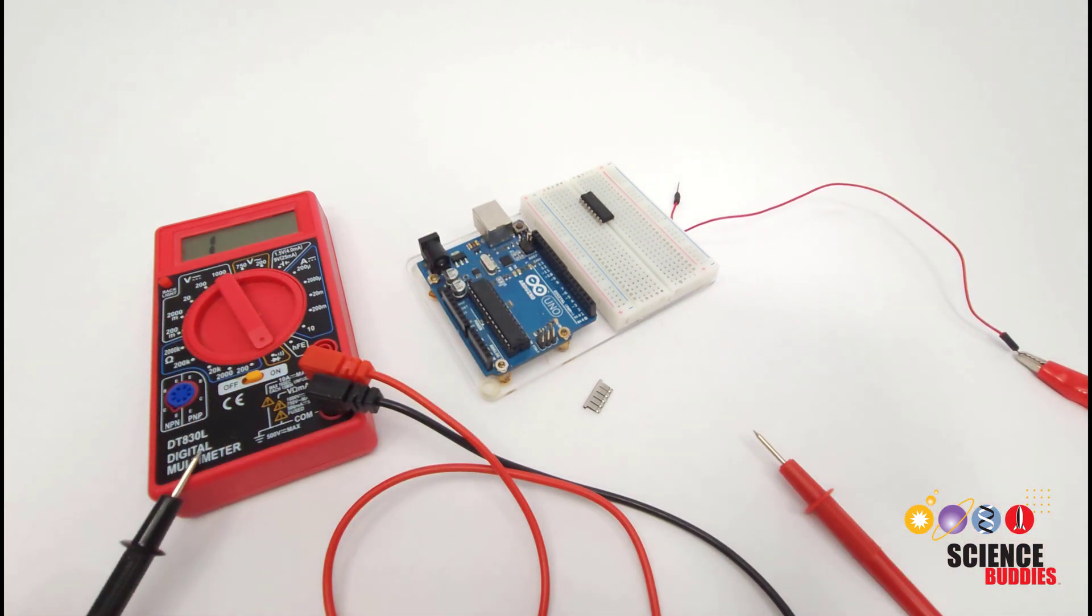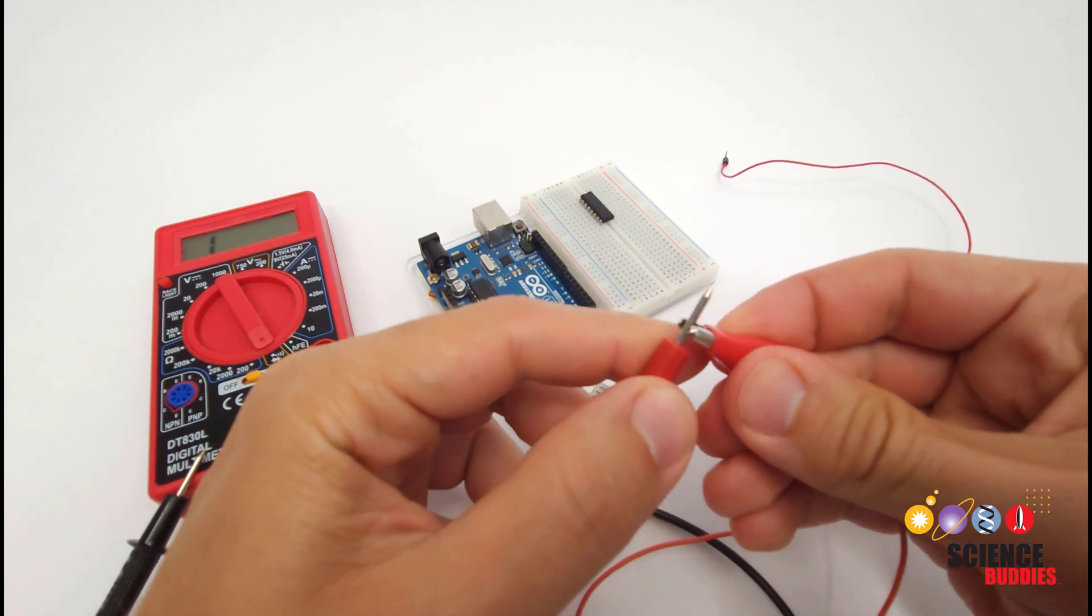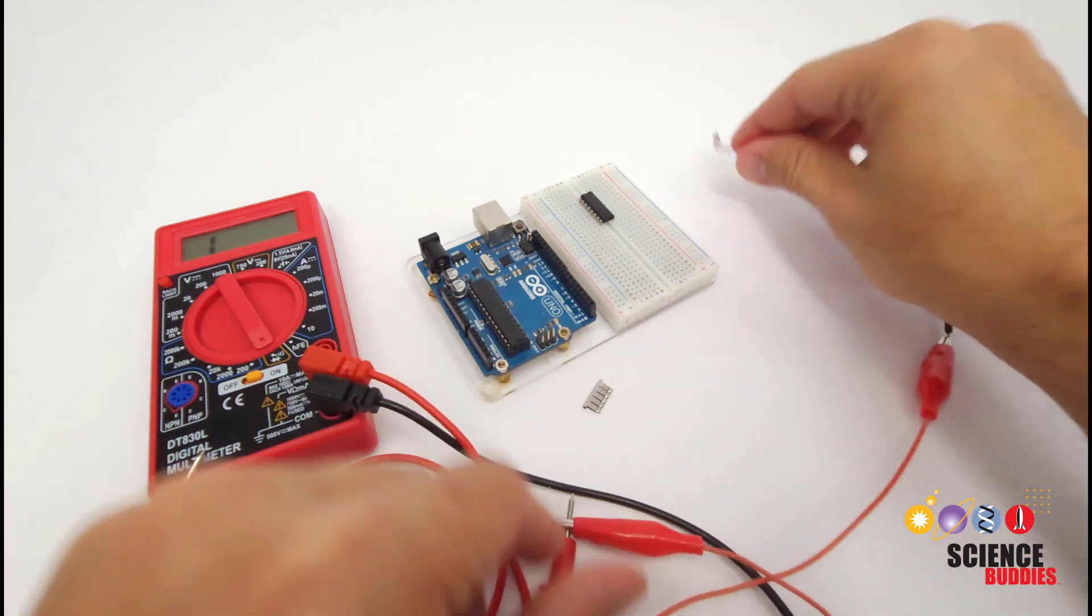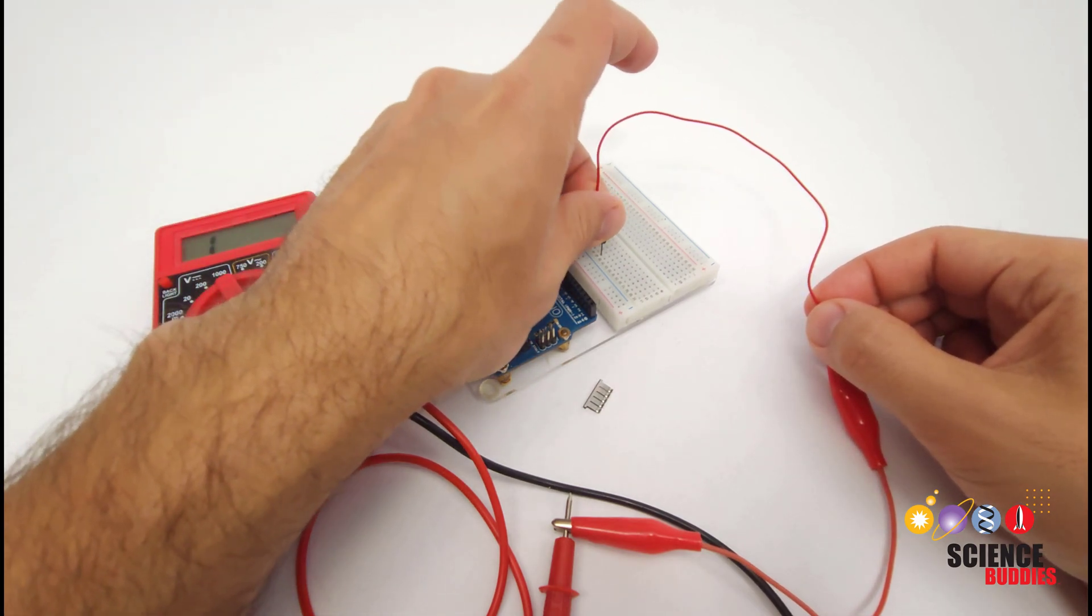The only small problem here is that these probes don't really fit very well into the breadboard holes, so I am going to be taking alligator clips. I'm going to connect one end of the alligator clip to one of the multimeter probes, the other end to a jumper wire, and then that jumper wire is going to fit into the breadboard.